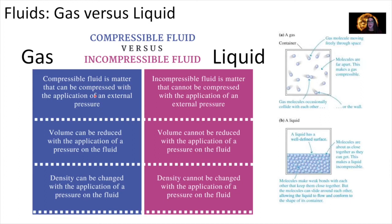Before we move on, let's talk about the difference between a compressible and an incompressible fluid. A compressible fluid is one in which the matter can be compressed with the application of an external pressure. Because we can compress that fluid, the volume can be reduced and the density can change when pressure is applied. Standard air at room temperature is considered a compressible fluid.